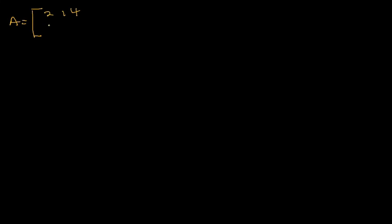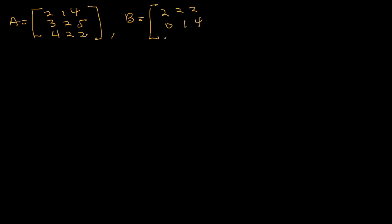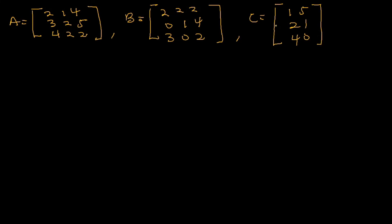So let's look at another example to end this tutorial. We have matrix A = 2, 1, 4; 3, 2, 5; 4, 2, 2 — a 3×3 matrix — matrix B = 2, 2, 2; 0, 1, 4; 3, 0, 2 — also a 3×3 matrix — and matrix C = 1, 5; 2, 1; 4, 0 — a 3×2 matrix. We are to find AB, CA, and BC. For AB: both are 3×3 matrices, the inner values match, so we can multiply and expect a 3×3 result. For CA: C is 3×2 and A is 3×3 — the column of C is 2 and the row of A is 3, which are not equal — so matrix CA does not exist. For BC: B is 3×3 and C is 3×2 — the inner values both equal 3 — so we can multiply and expect a 3×2 result.